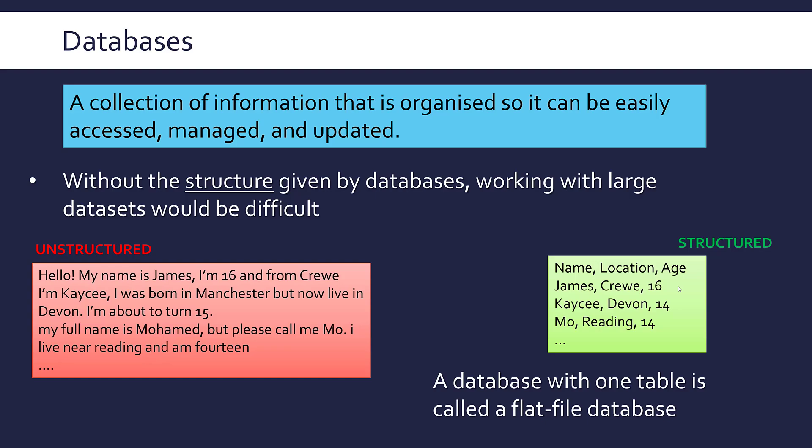A database with only one table is called a flat file database. They're not really so useful and don't scale well with lots of data. To introduce two important words: records and fields. Records are our rows in the database, and fields are our columns. When talking about databases, think record for row and field for column.